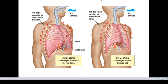This diagram shows the location of the diaphragm. Inhalation is caused when the diaphragm contracts and air moves into the lungs. Exhalation occurs when the diaphragm relaxes — the ribcage gets smaller, rib muscles relax, and air is moved out of the lungs.